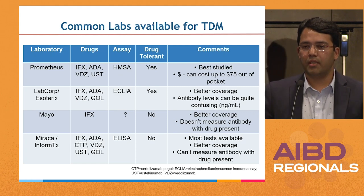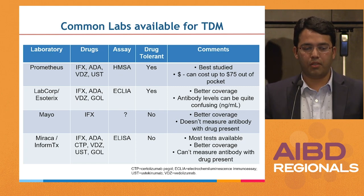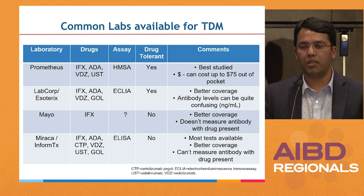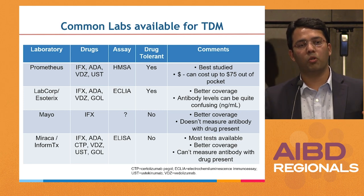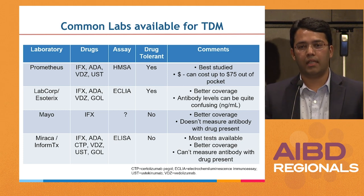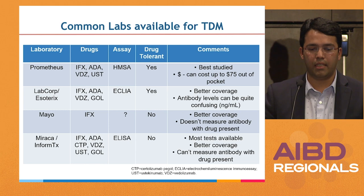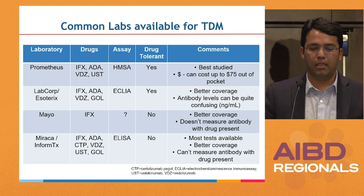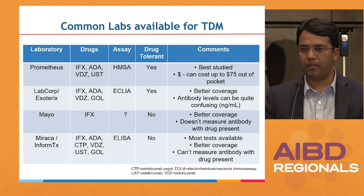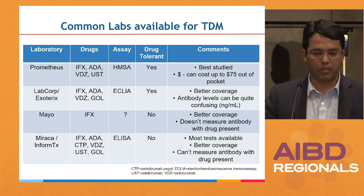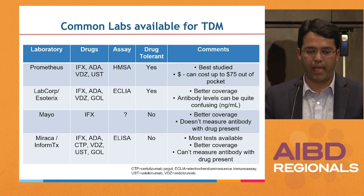Here is an overview of commonly available labs for therapeutic drug monitoring. There are four that I know of. The Prometheus assay, which is a homogenous mobility shift assay, is a drug-tolerant assay, meaning you can measure both antibodies and drug in conjunction with each other — it reports both trough concentration and anti-drug antibodies. It's probably the best-studied assay, though it can be costly. You should eventually end up paying around $75 out of pocket.